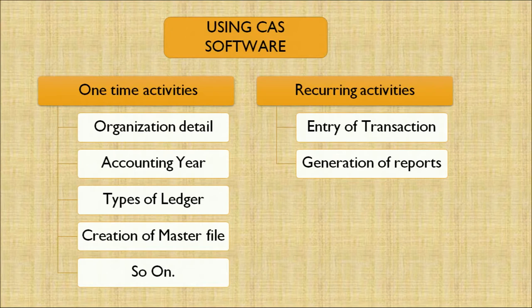Let's now discuss the software activities. There could be one-time activities and recurring activities. One-time activities include organization details, accounting years, type of ledgers, and creation of a master file. When I talk about recurring activities, it could be entry of transactions and generation of reports. In the computer system, there are masters in place — one-time activities include filling in organization details like 'XYZ Private Limited,' the accounting year, types of ledgers, and creation of master files.